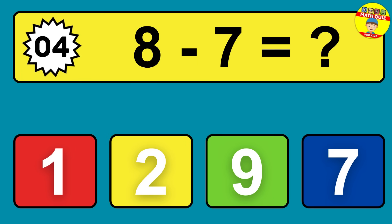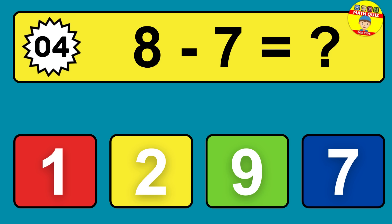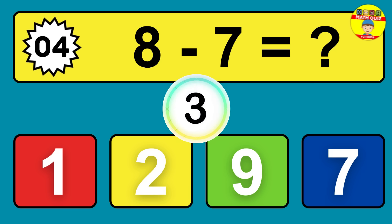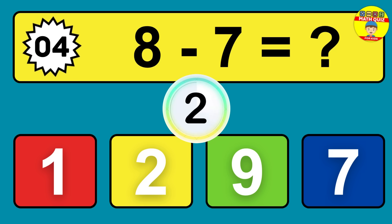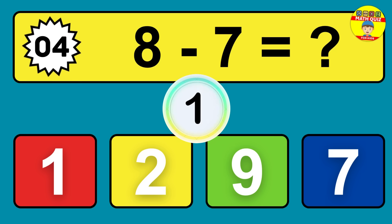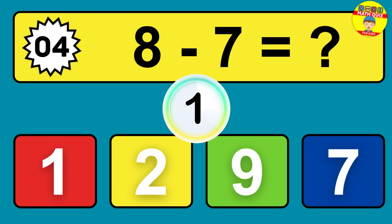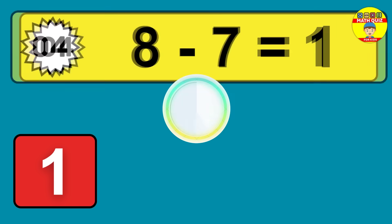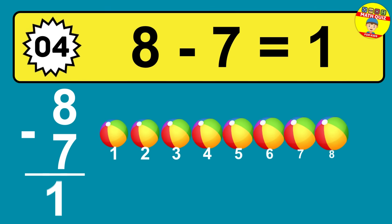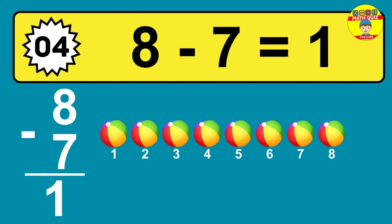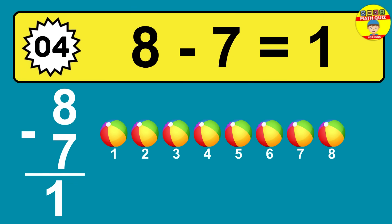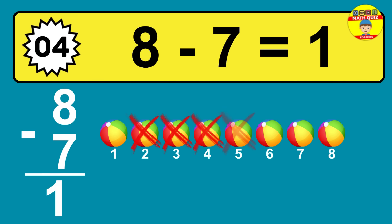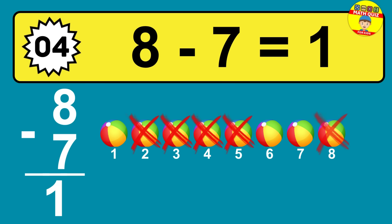Question 4: 8 minus 7 equals what? So the answer is 8 minus 7 is 1. Let's count it: 1.